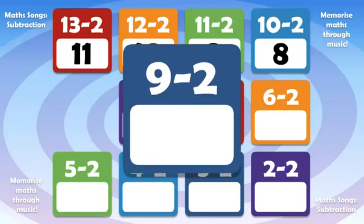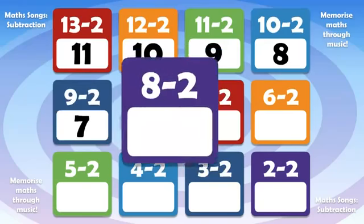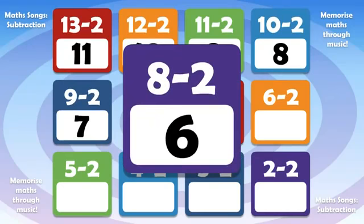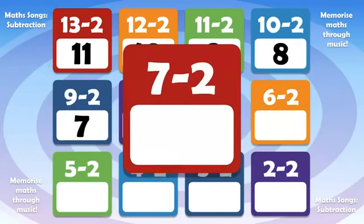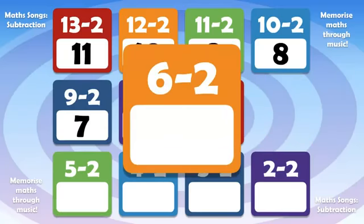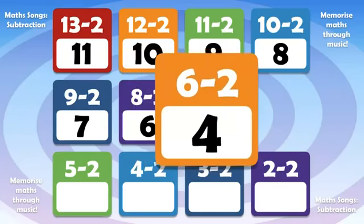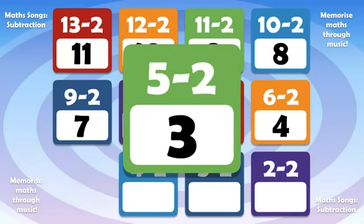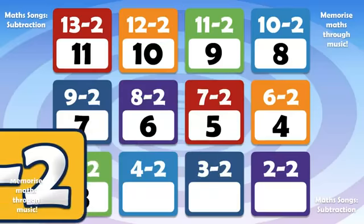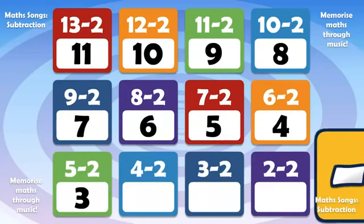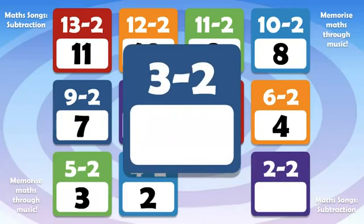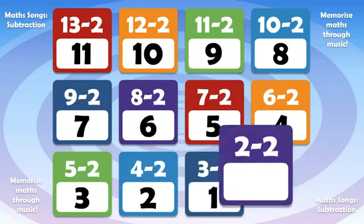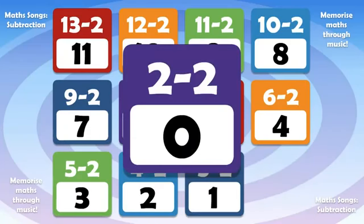9 minus 2 is 7, 8 minus 2 is 6, 7 minus 2 is 5, 6 minus 2 is 4, 5 minus 2 is 3, 4 minus 2 is 2, 3 minus 2 is 1, 2 minus 2 is 0.